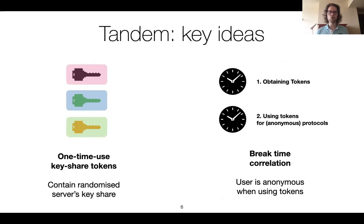Tandem achieves this using two key ideas. The first key idea is to create one-time-use key share tokens that contain an encrypted, randomized version of the server's key share. We use these to run key sharing protocols without having to identify the user. These tokens need to be obtained, and what we propose is that users' devices regularly obtain these tokens — say at the start of the day or throughout the day — so that when the tokens are used, there is no time correlation between obtaining them and using them, thereby providing privacy.